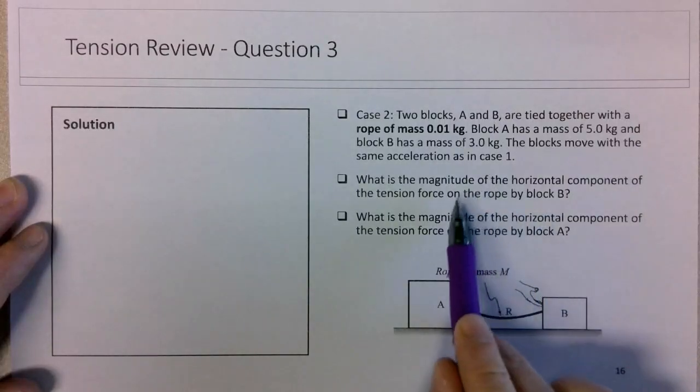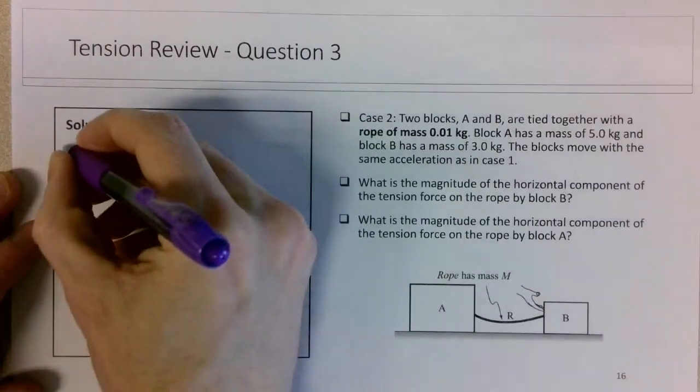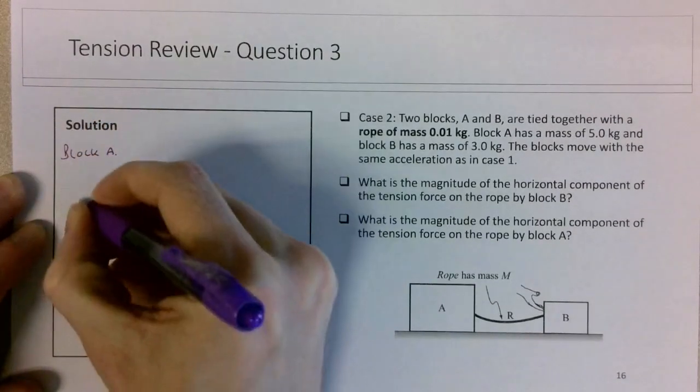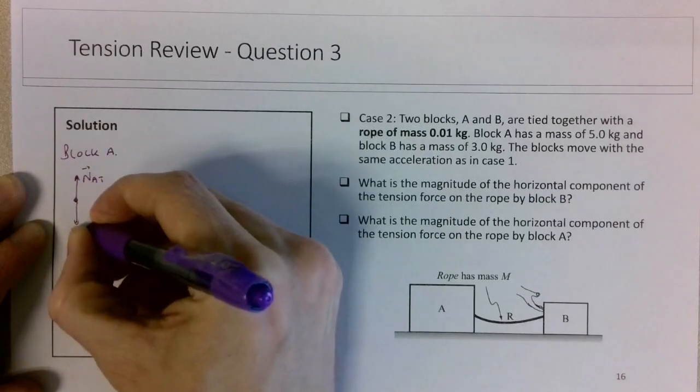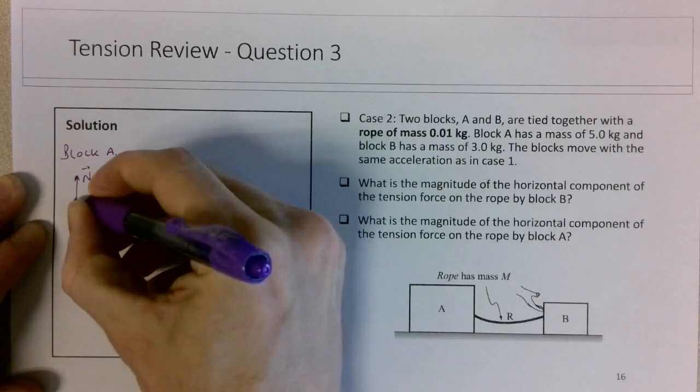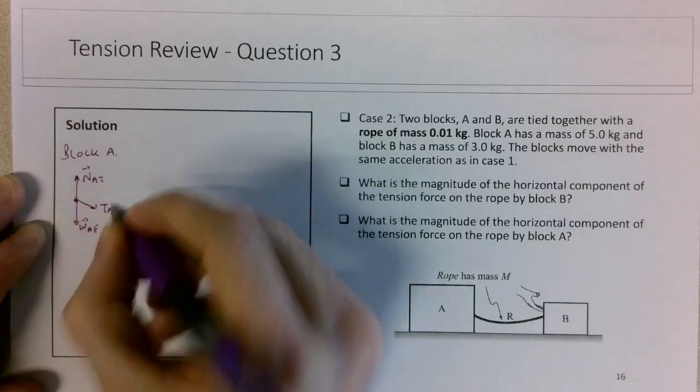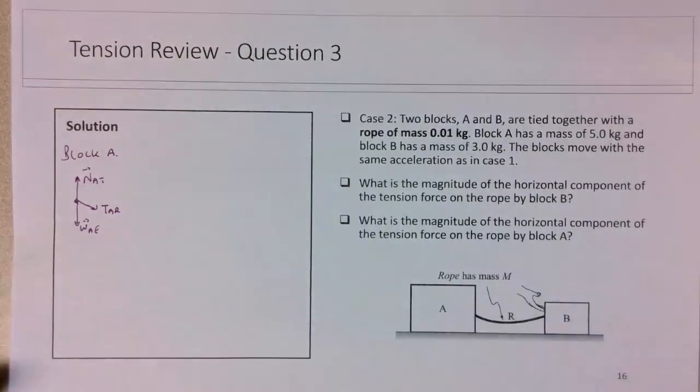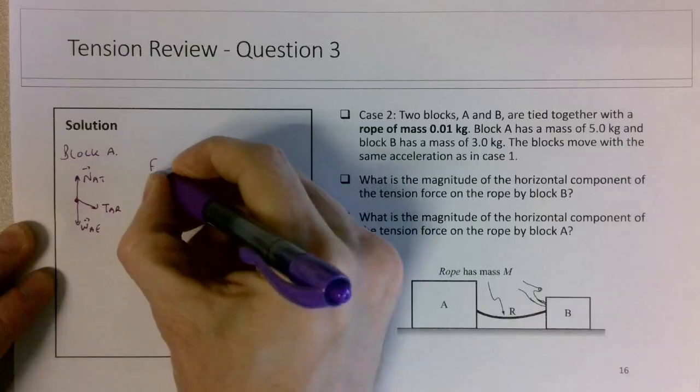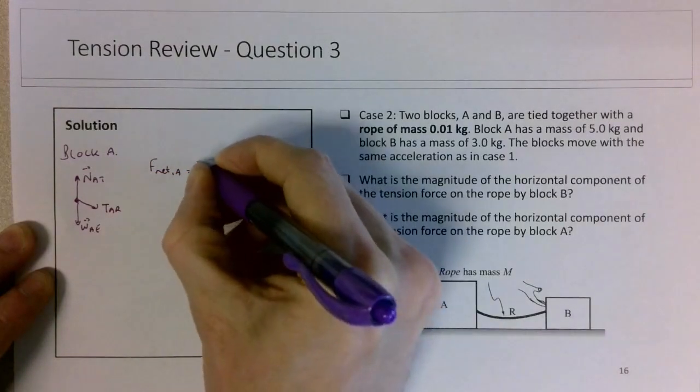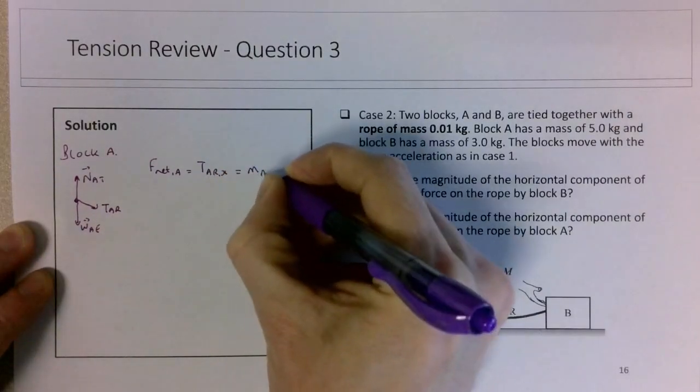We're trying to work out the forces on the two blocks, but I'm actually going to start with block A. If I think about the free body diagram for block A, there will be a normal force on A by the table, weight force on A by the earth, and there will be some sort of tension force on A by the rope, but I'm only considering the x component of this particular force. So the F_net on A will be equal to the tension force on A by the rope in the x direction, which will be the mass of A times the acceleration of A.